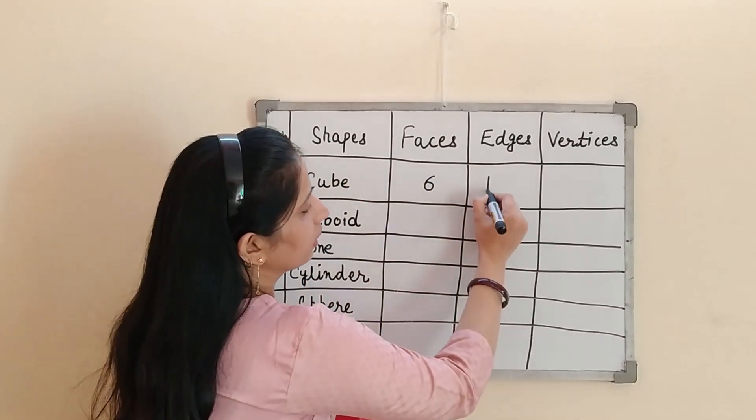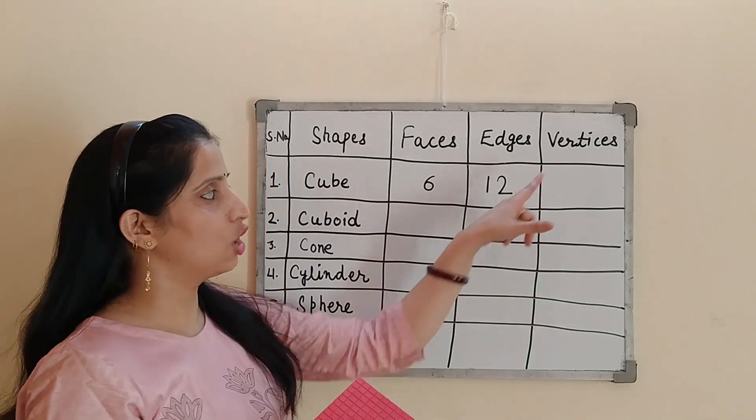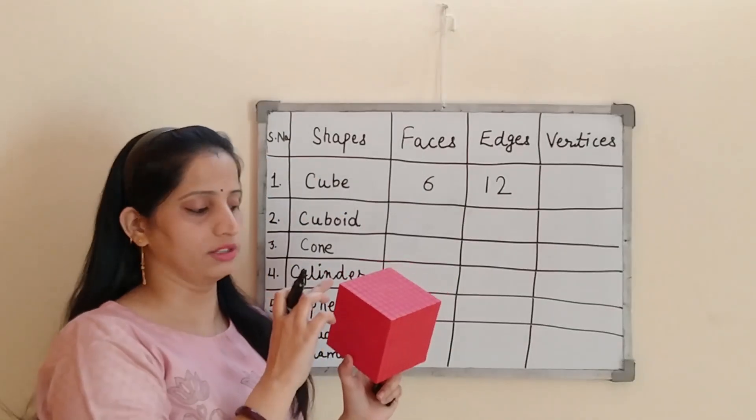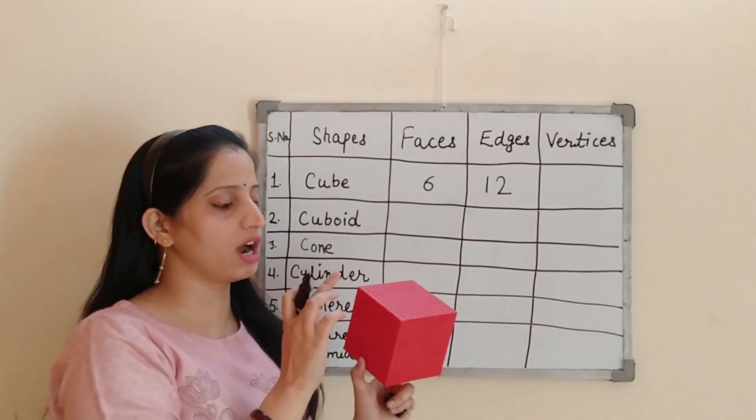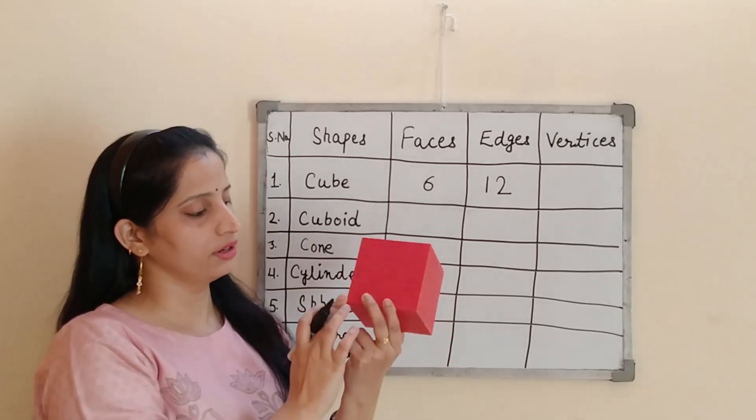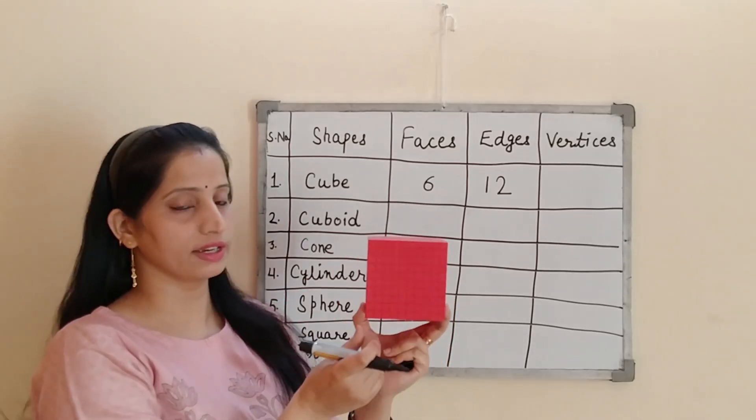So our cube is having 12 edges and how many vertices? Vertices are the corners. So now let's count the corners. 1, 2, 3, 4, 5, 6, 7, and 8. It has 8 vertices.